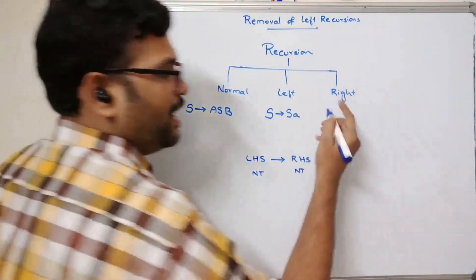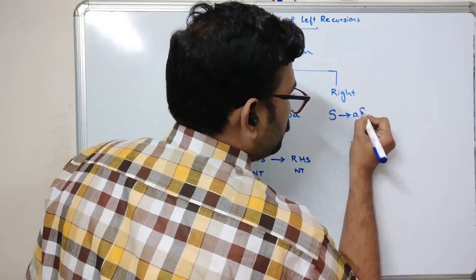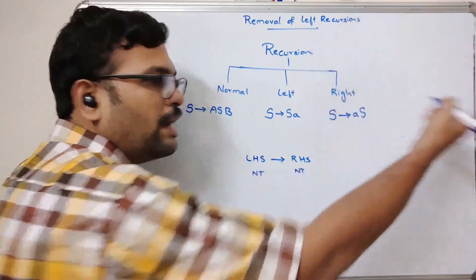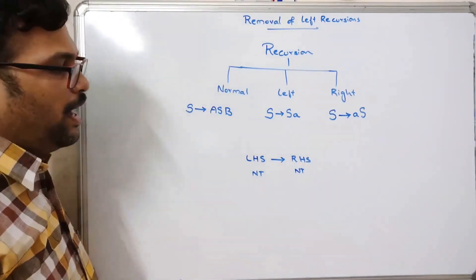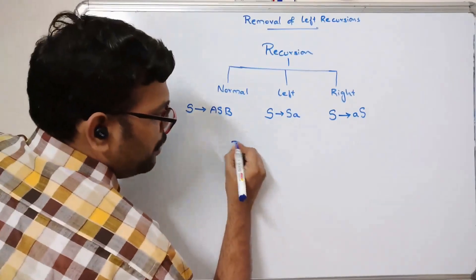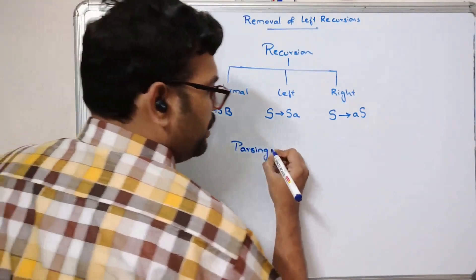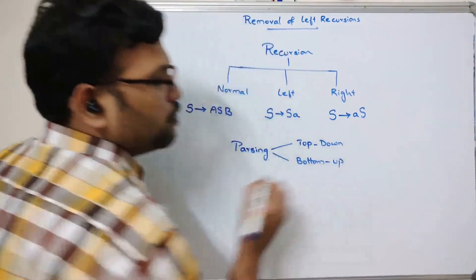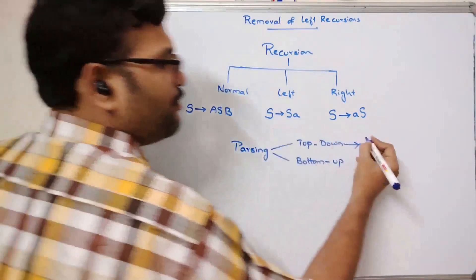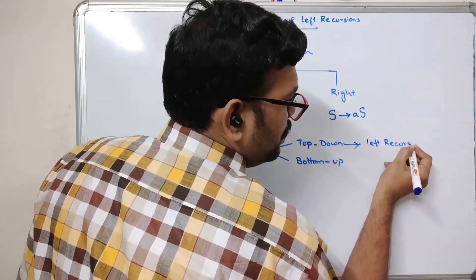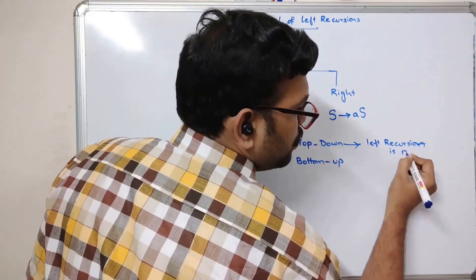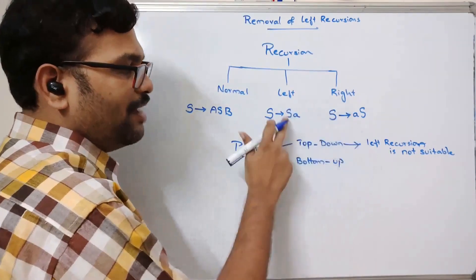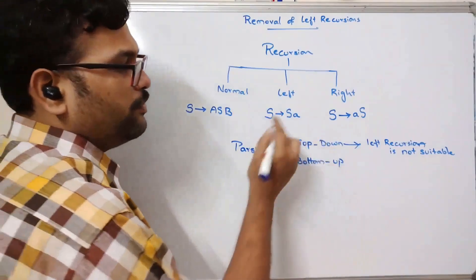If the same non-terminal is at the rightmost position on the right-hand side, it is called right recursion. During top-down parsing, left recursion is not suitable. There is no problem with normal recursion or right recursion, but if it is a left recursion, it is not suitable for top-down parsing. That is why we need to remove left recursions from the productions.